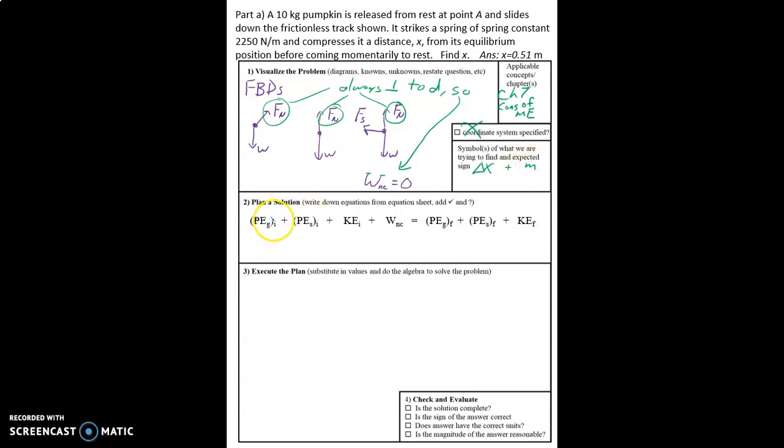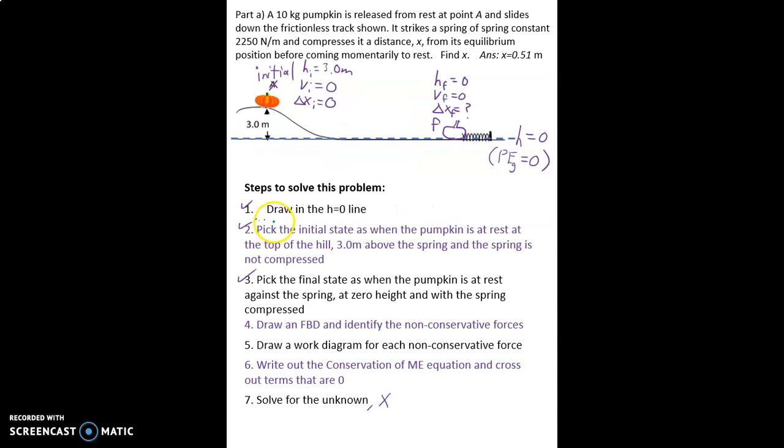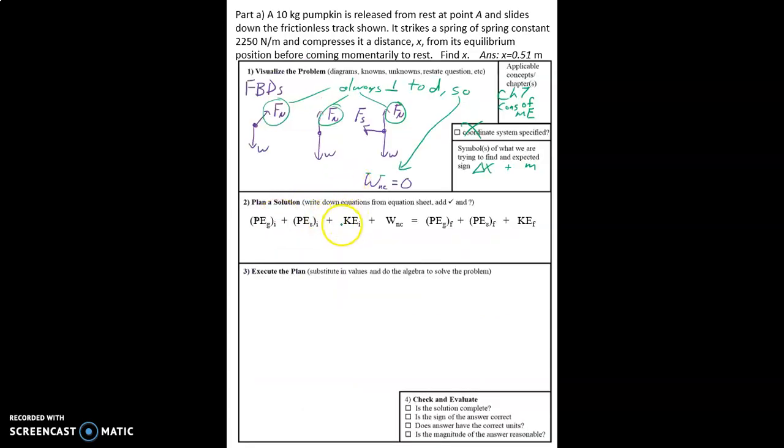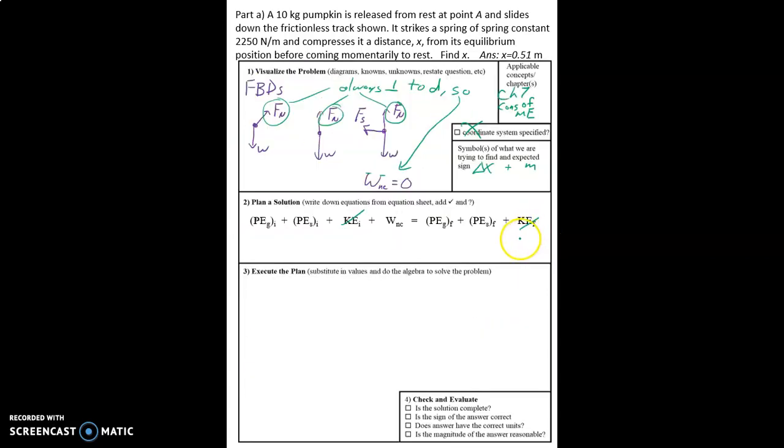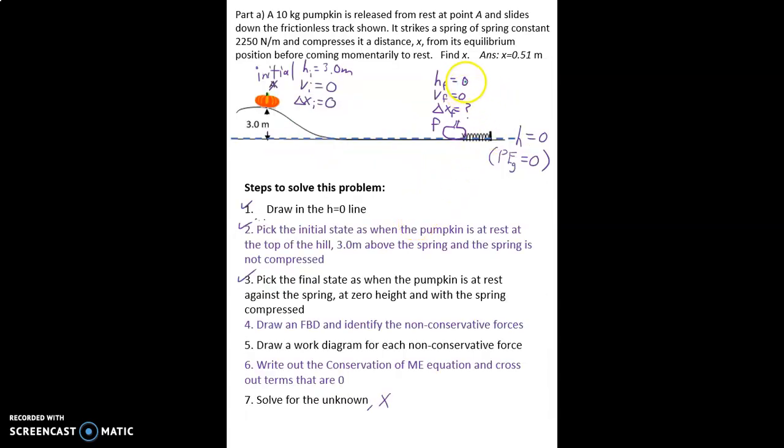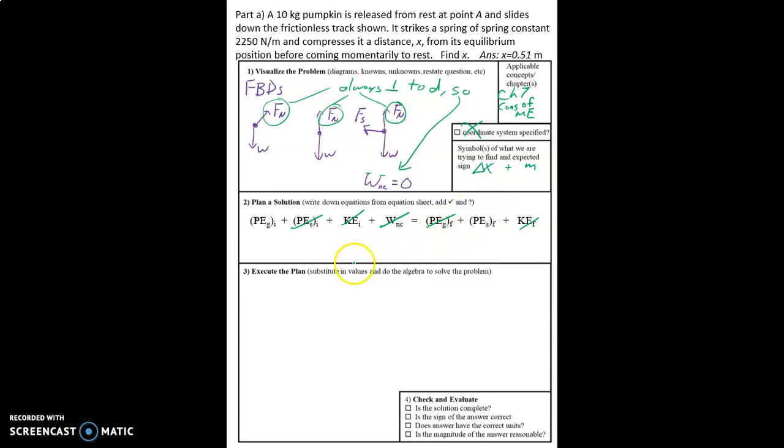All right so we're going to use this conservation of mechanical energy equation based on our diagram. On the last slide we know that the velocity initial and final are zero. So we can go ahead and get rid of the kinetic energy initial and final. We also know that initially there's no spring energy and get rid of that. We just talked about how there's no work by non-conservative forces and when it's in the final state the height is zero. So there's no gravitational potential energy.